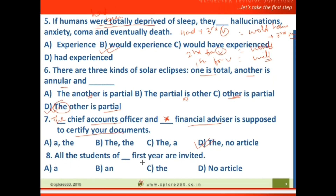'All the students of dash first year are invited.' You can easily answer this with 'the first year.' There are two types of numbers: ordinal numbers (first, second, third) and cardinal numbers (one, two, three). You use an article only with ordinal numbers — for ranking purposes like first, fifth, ninth — not with cardinal numbers. So 'the first year' is correct.